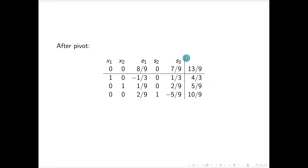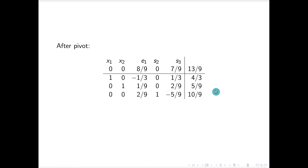After pivoting we get the new tableau. Reading off the solution: x1 = 4/3, x2 = 5/9, s1 = 0, s2 = 10/9. The new constraint has been successfully incorporated and we have a new feasible optimal solution. Have fun with the exercises — see you later!